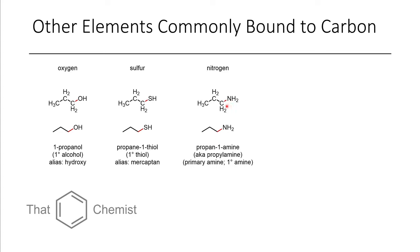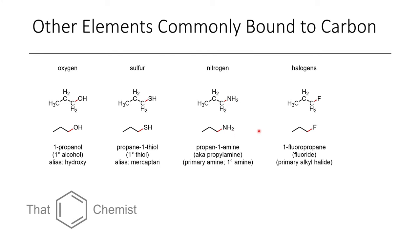If we have a nitrogen forming a single bond to a carbon, we have an amine. This is a primary amine, and this would be called propylamine, also known as propanamine. If we only have one carbon connected, it's a primary amine; if we have multiple, we get to secondary and tertiary. Here I also have a fluorine connected to carbon, which we call a fluoroalkane or alkyl fluoride — specifically a primary alkyl fluoride.